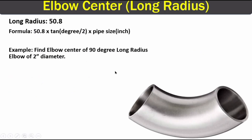Moving on to our third type of elbow: the long radius elbow. In the case of a long radius elbow, the only change in the formula is 50.8. So the formula is: 50.8 multiplied by 10, into degree divided by 2, multiplied by pipe size in inches.